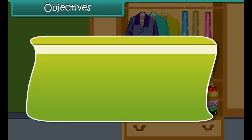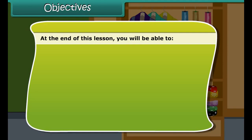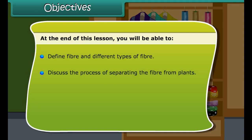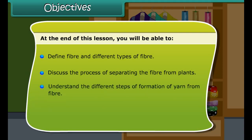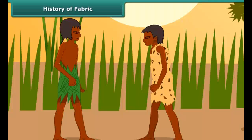Objectives: At the end of this lesson, you will be able to define fiber and different types of fiber, discuss the process of separating the fiber from plants, understand the different steps of formation of yarn from fiber, and explain knitting and weaving of fabric.